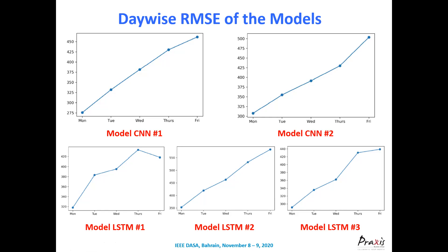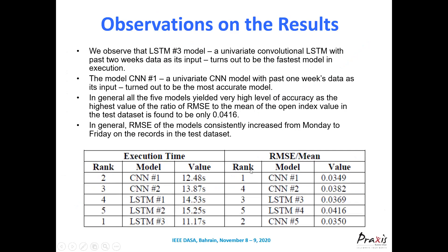Most models commit the least error on Mondays and the maximum error on Fridays. There is one notable deviation: LSTM1 exhibits maximum error on Thursdays rather than Fridays. The slowest model turns out to be LSTM2, which is the CNN-LSTM model that deployed one CNN in the encoding layer.